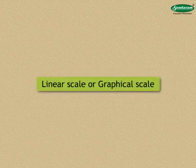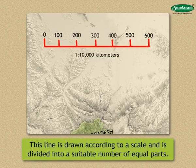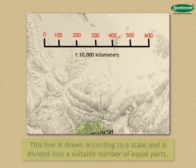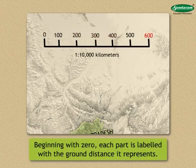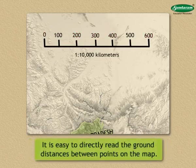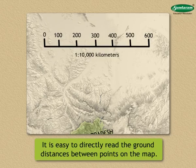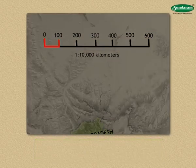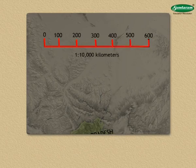Linear or graphical scale. This line is drawn according to the scale and is divided into a suitable number of equal parts. Beginning with 0, each part is labelled with the ground distance it represents. With this scale, it is easy to directly read the ground distances between points on the map. You can take the distance between two points on the map in your divider. When you place the divider on the scale, you get the ground distance.